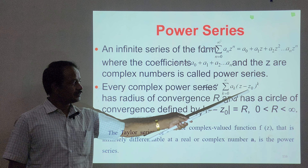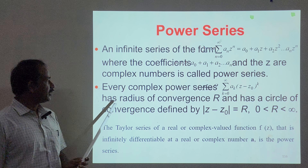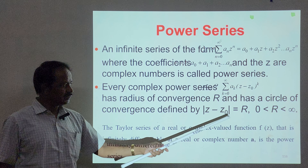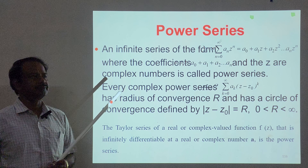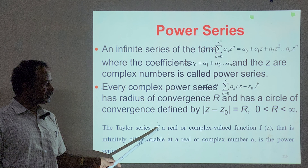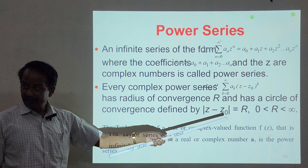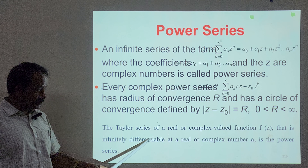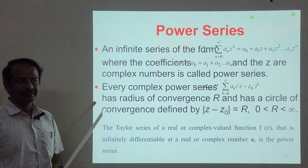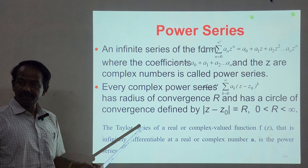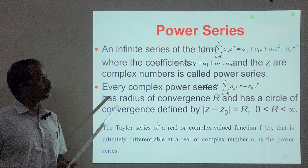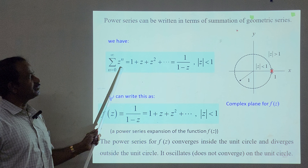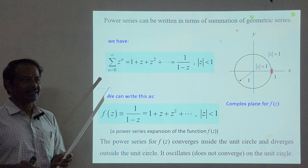Every complex power series of the form — summation of a_k times (Z minus Z₀) to the power k — has a radius of convergence r and a circle of convergence defined by |Z minus Z₀| equals r, where the radius r lies between 0 and infinity. Now, the definition of Taylor series: it is for a real or complex valued function f(Z) that is infinitely differentiable. Z equals X plus iY is a complex function, and it is expressed as a power series.